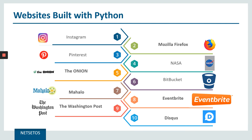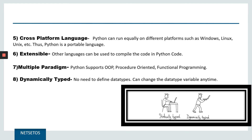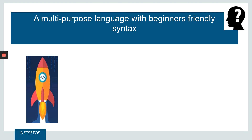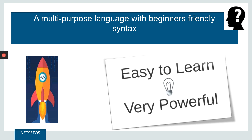Talking about websites built on Python: there are Instagram, Mozilla Firefox, Pinterest, NASA, YouTube, Reddit, and many more. Python is a multi-purpose language with beginner-friendly syntax and is the fastest growing programming language. It is very easy to learn and very powerful — its APIs are used in many fields.